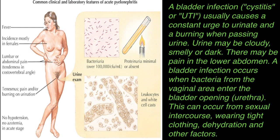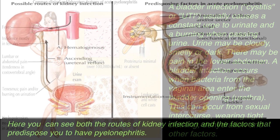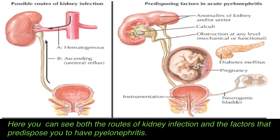This can occur from sexual intercourse, from wearing tight clothing, from dehydration, and other factors. Here you can see both the routes of kidney infection and the factors that predispose you to get pyelonephritis. This includes hematogenous spread or ascending infection through ureteral reflux.